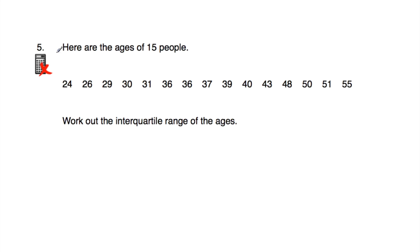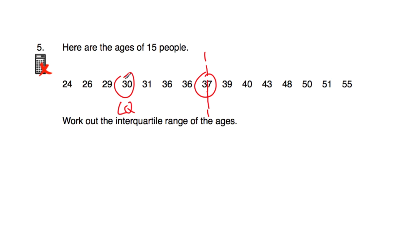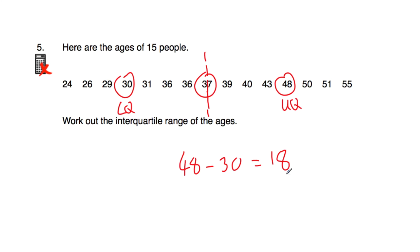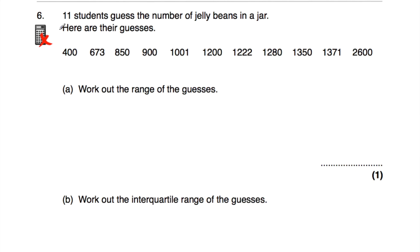Question number five: the ages of 15 people are given and they are in order. We need to work out the interquartile range of the ages. First find the median: 15 plus 1 is 16, divided by 2 is 8, so the eighth value is the median. Then the lower quartile from the bottom 50% of data is 30 years old. The upper quartile from the top 50% is 48. So the interquartile range is 48 subtract 30 equals 18.